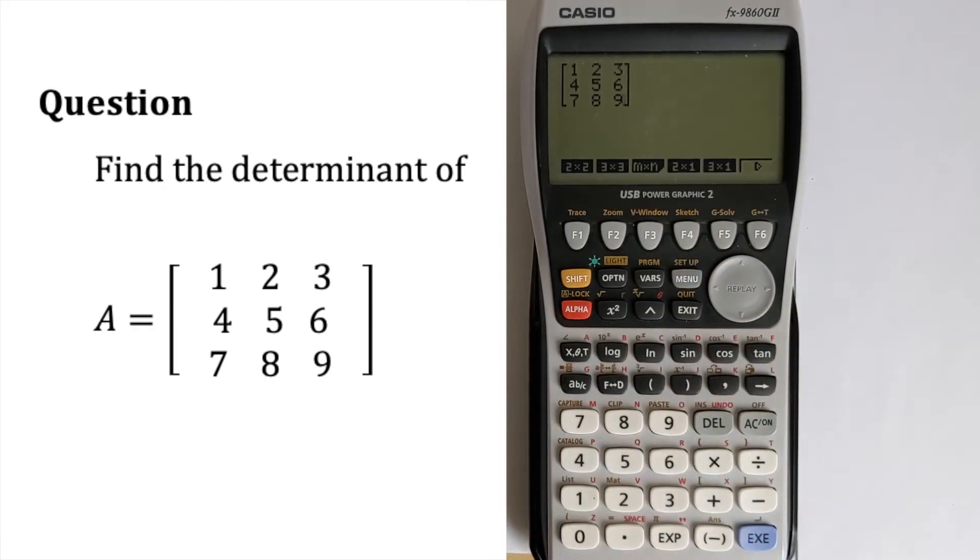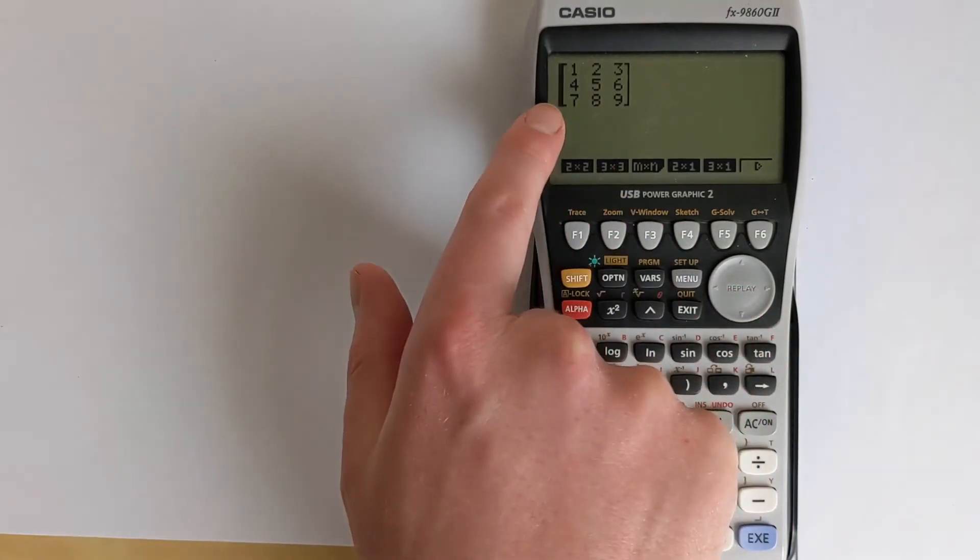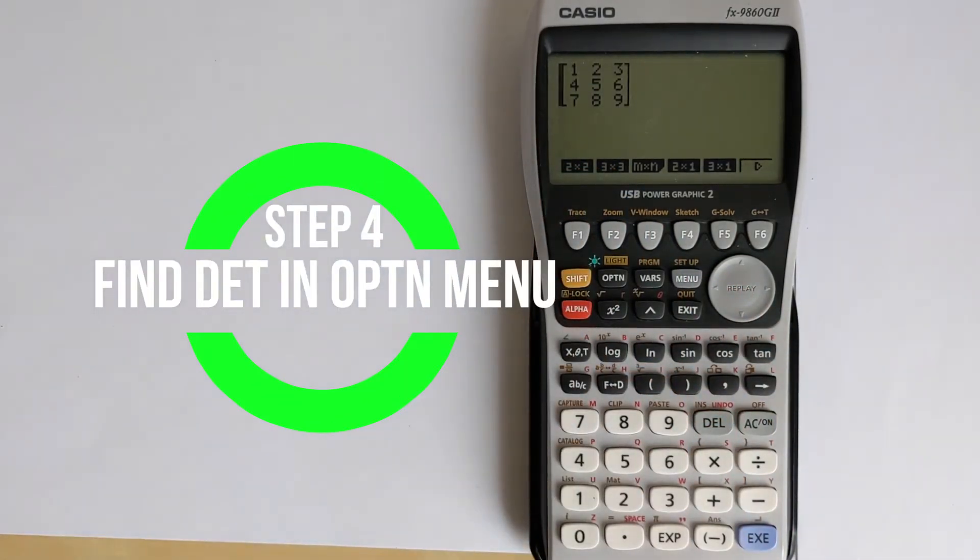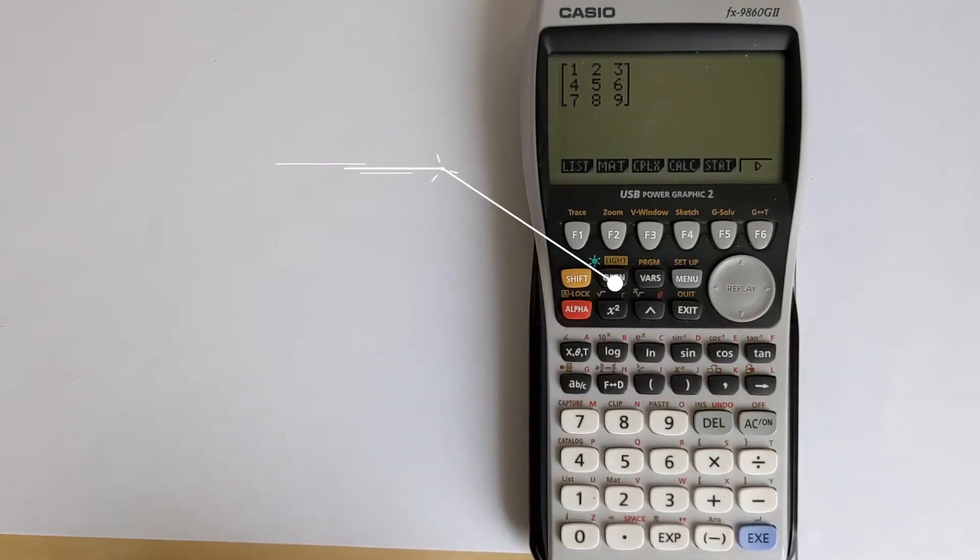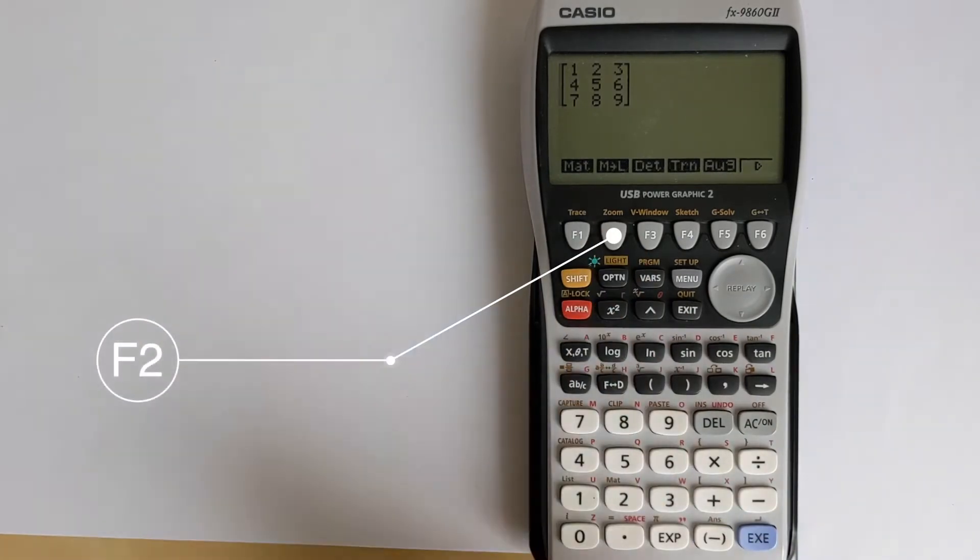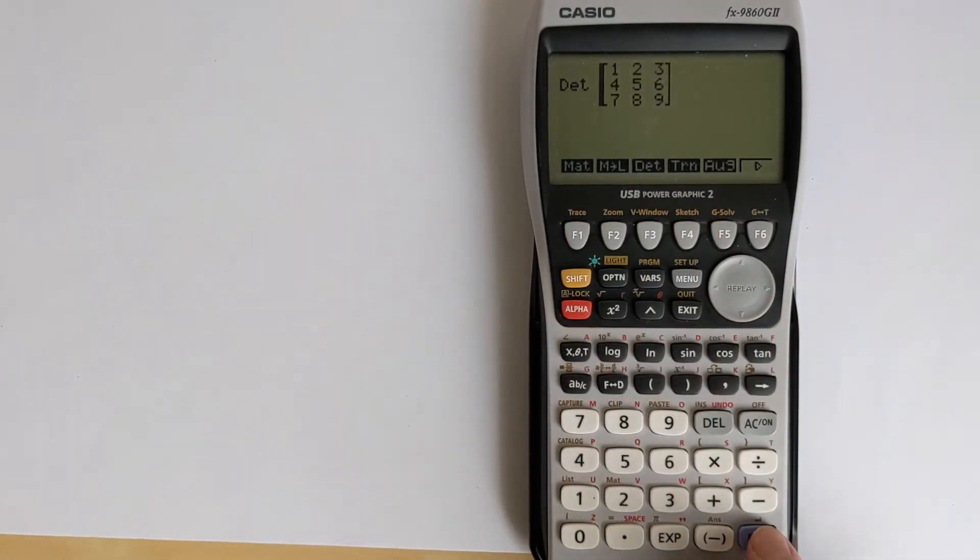Don't press execute at this point. What you want to do is navigate back to the beginning of the matrix. And then with the option menu, we're going to find the determinant function. So we press option. Then we go into MAT for matrix. And then you've got det here. So you press that. And then you can press execute.